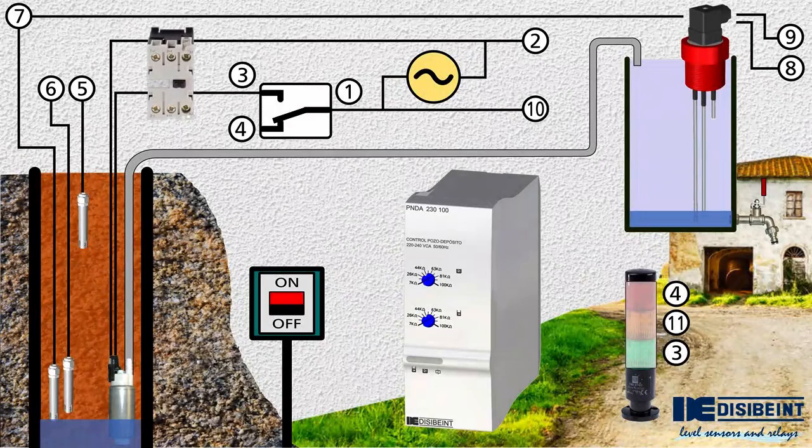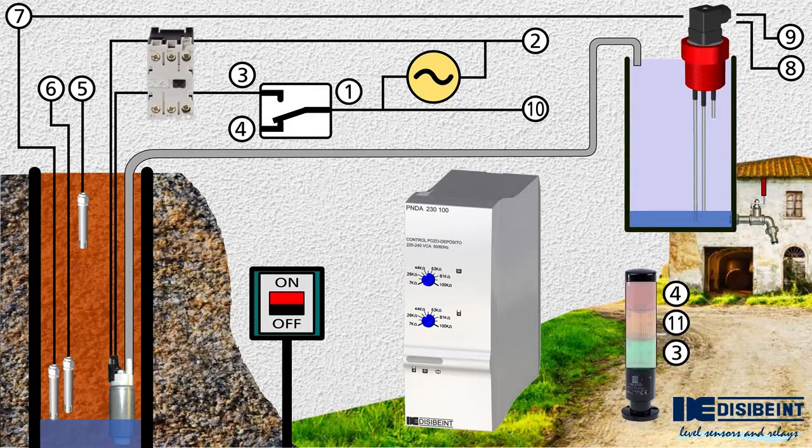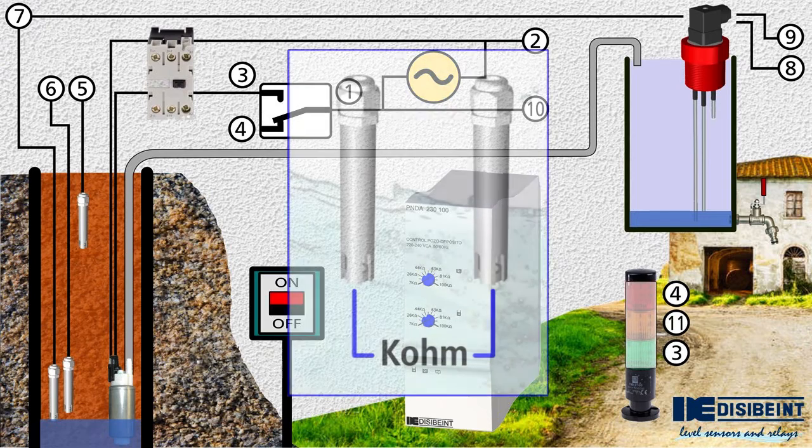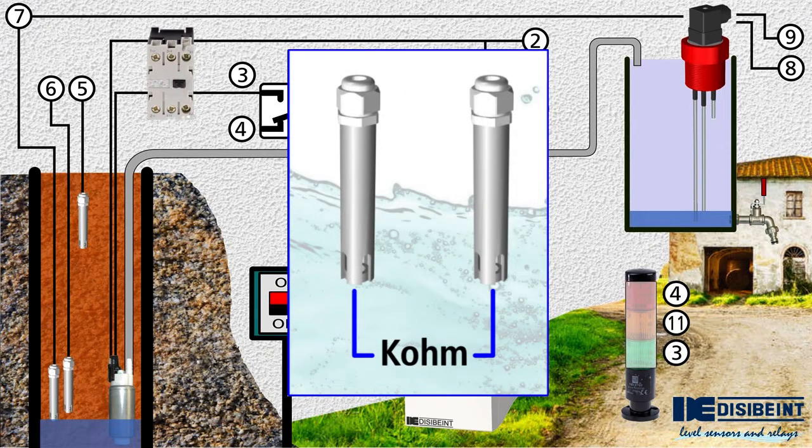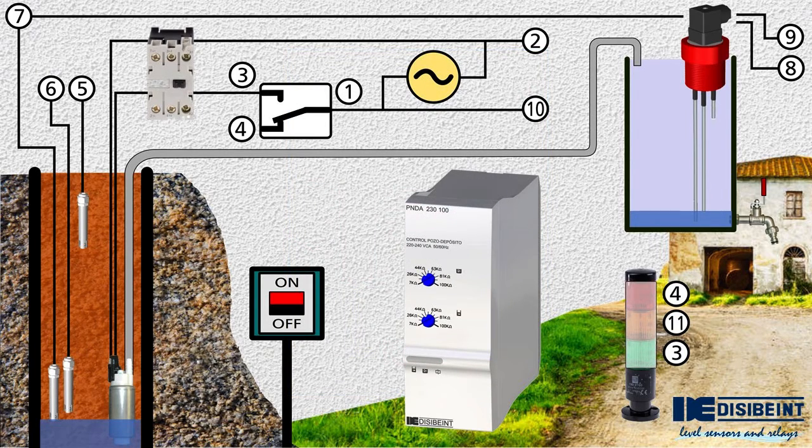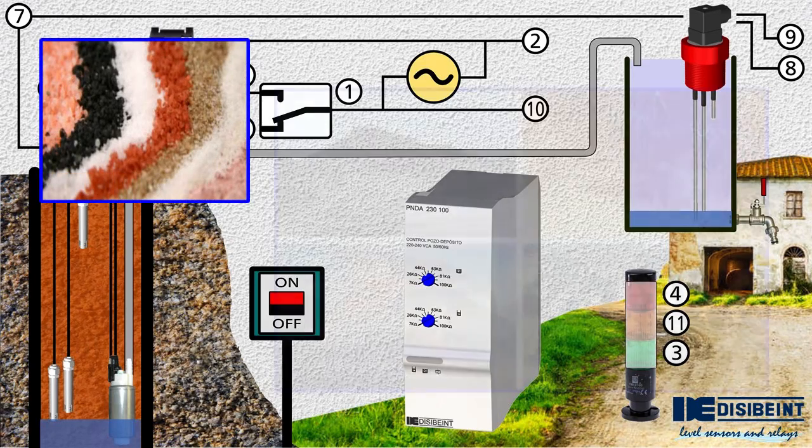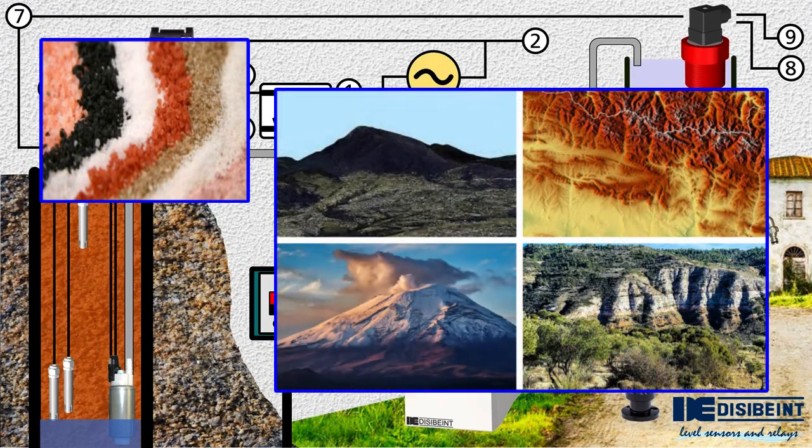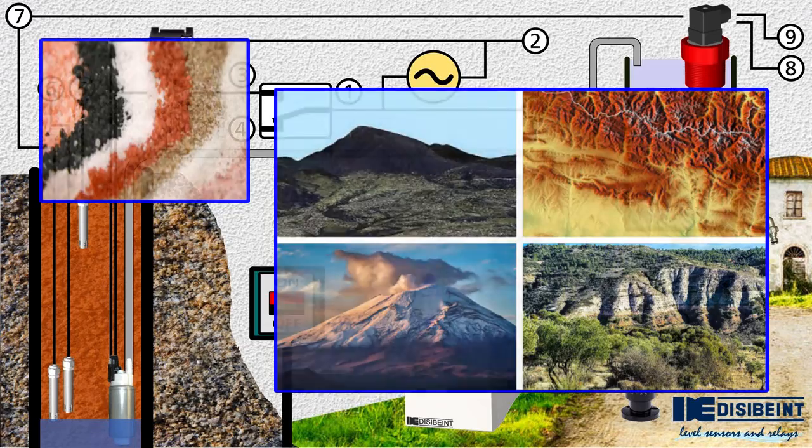The operation of level relays is based on the conductivity of the liquid they are controlling. They measure the resistivity between the probes and act on a relay depending on the presence or lack of liquid. In the case of well water, the conductivity can vary depending on the quantity and type of mineral salts that make up the subsoil, derived from the geographical area or the orography of the place.